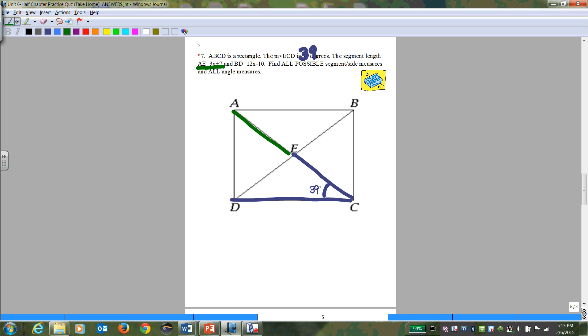Dot to dot. The measure of AE is, so A to E is going to be 3X plus 7. And B to D, it's going to be all the way across, is going to be 12X minus 10. Now, obviously, they are not equal. It's very important you understand that. You just don't randomly make things equal. AE does not equal BD.